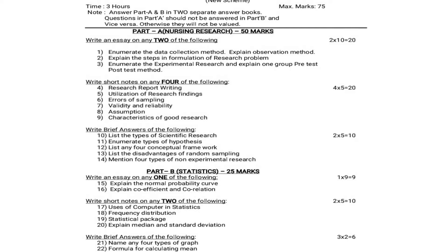Moving on to short notes: they will give 6 short notes and you have to answer only 4. 4 into 5 equals 20 marks. Question 4: Research report writing. Question 5: Utilization of research findings. Question 6: Errors of sampling. Question 7: Validity and reliability. Question 8: Assumptions. Question 9: Characteristics of good research. Answer any 4 out of these 6 for 20 marks.